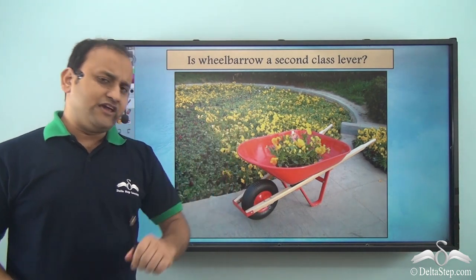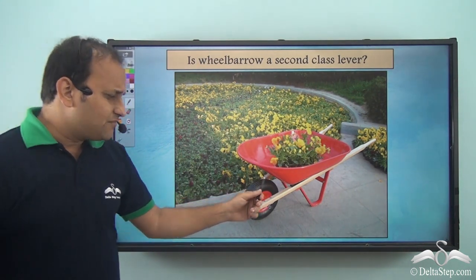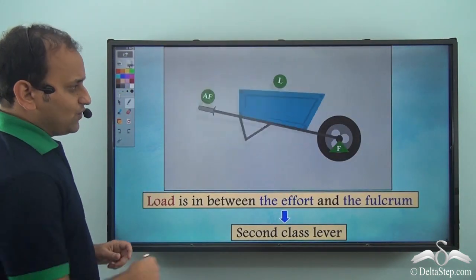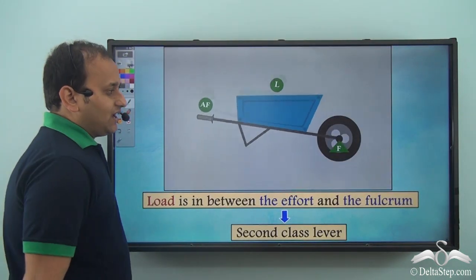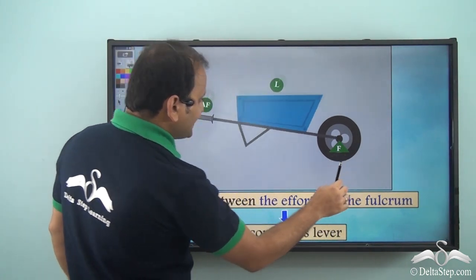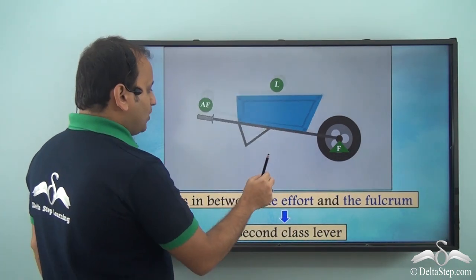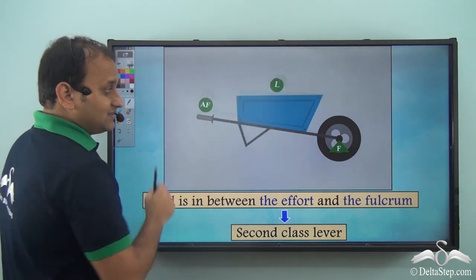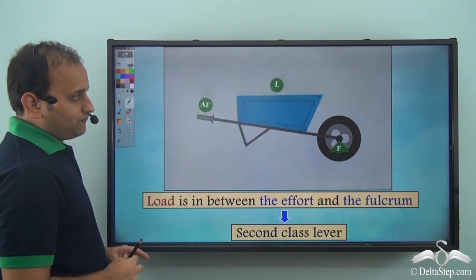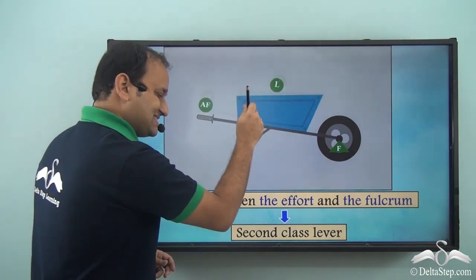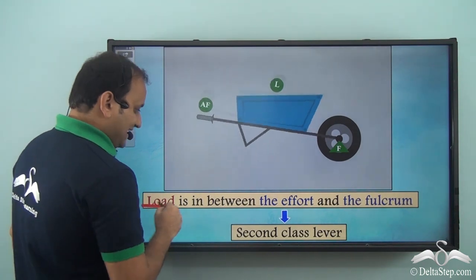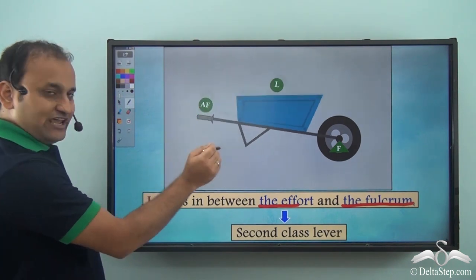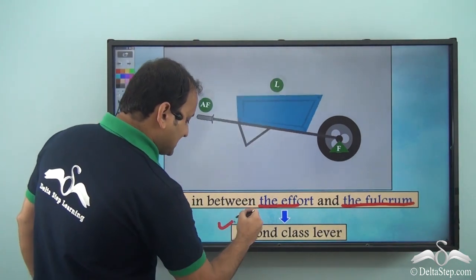What about a wheelbarrow? Is it a second class lever? In a wheelbarrow, it moves along a fixed point here, and you have load in the middle while the applied force — the effort — is on the other side. Load is in between the effort and the fulcrum, and that's why a wheelbarrow is a second class lever.